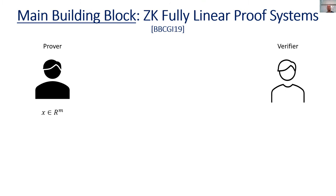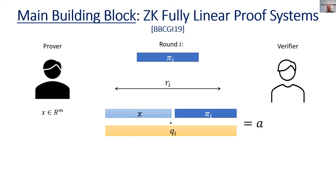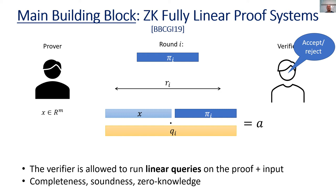From now on, let's focus on our verification protocol. The main building block that we use is zero-knowledge fully linear proof systems, a notion introduced by Boneh et al. at Crypto 2019. Here we have a prover and a verifier. The prover holds a secret input x and wants to prove some statement over x. The prover and verifier interact in multiple rounds. In each round, first the prover outputs a proof pi_i, then there are public coins chosen, and then the verifier can query both the input and the proof. The key property is that the verifier is only allowed to run linear queries on the proof and the input — this is why these proof systems are called fully linear. Completeness, soundness, and zero-knowledge are defined in the standard way.